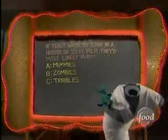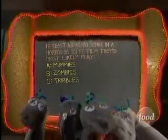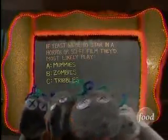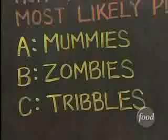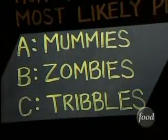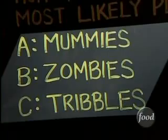Last question: If yeast were to star in a horror or sci-fi film, they'd most likely play — A. Mummies, B. Zombies, or C. Tribbles. The answer: all of the above. They start out dry as mummies, they reanimate like zombies, and then they reproduce like those gosh darn Tribbles. So, how'd you do? Who cares.